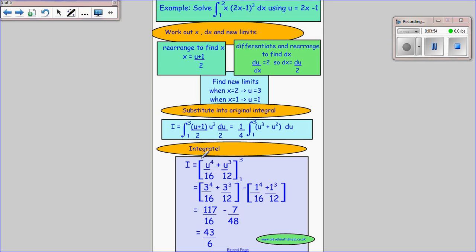When we use the definite integral we use these square brackets and put the limits of integration at the top and the bottom. Then to solve this we put u equals 3 first in all of this, take away u equals 1 in all of this.